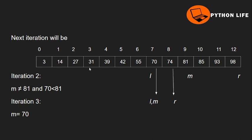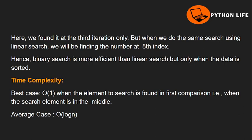In contrast, with sequential search we would have needed 7 iterations to find the same element. Binary search is a more efficient algorithm, but it requires the data to be sorted in ascending order.